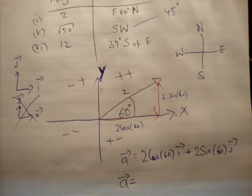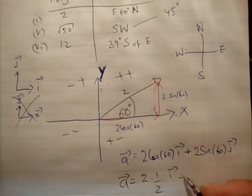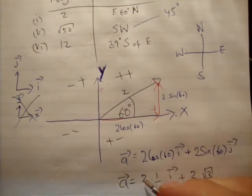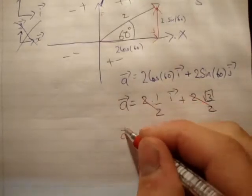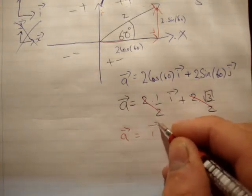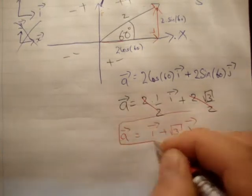Cos 60, if you look on page 13 of your new tables, cos of 60 is a half. So 2 times a half i-hat plus the sine of 60 is root 3 over 2. 2 times root 3 over 2. And we get vector a is equal to i-hat plus root 3 j-hat, as we saw in the book.